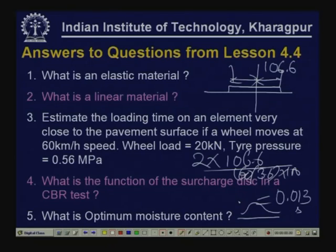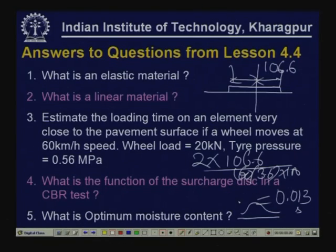The function of the surcharge disc in a CBR test is to simulate the thickness of the pavement that is normally placed on top of the subgrade. Depending on the expected pavement thickness, the corresponding weight of the surcharge disc is placed on the CBR sample. Optimum moisture content is the moisture content at which soil attains its densest state for a given compaction effort — as moisture content varies, dry density increases then decreases, so there is a moisture content that gives maximum dry density, which is the optimum moisture content.